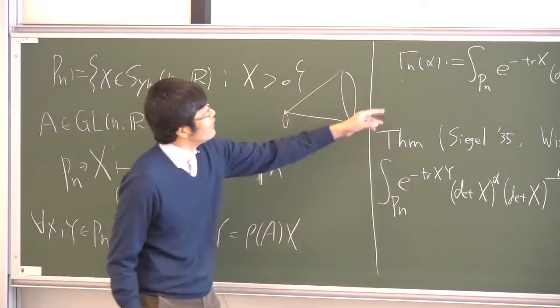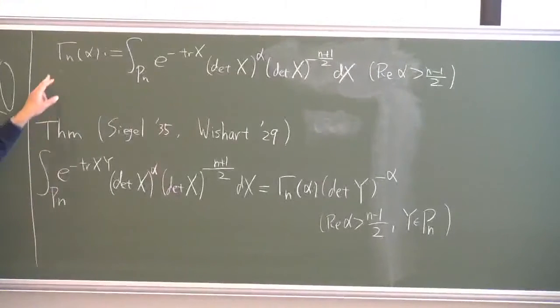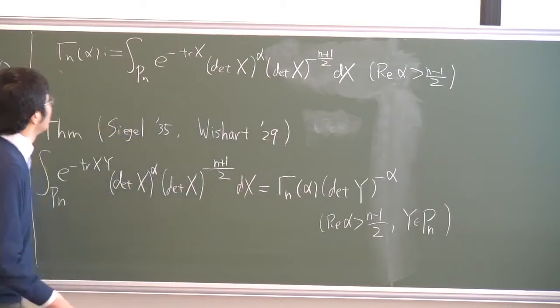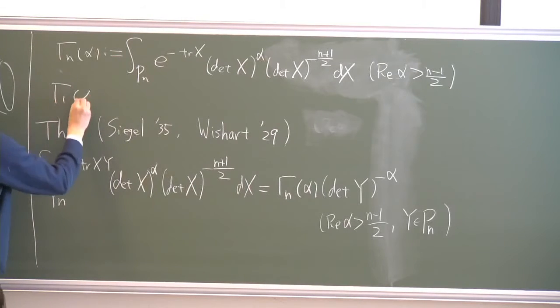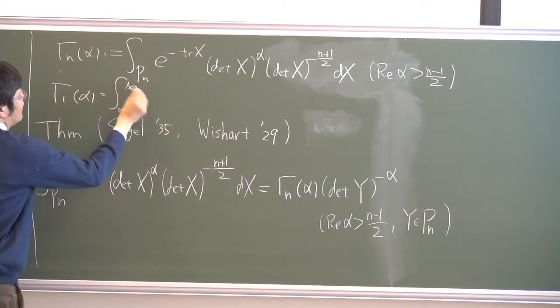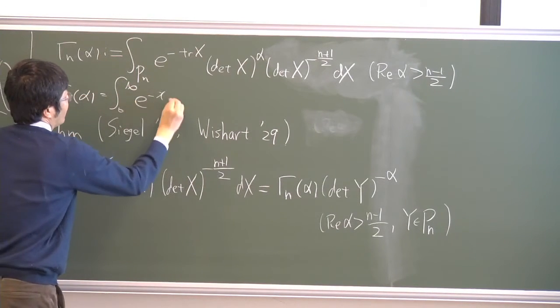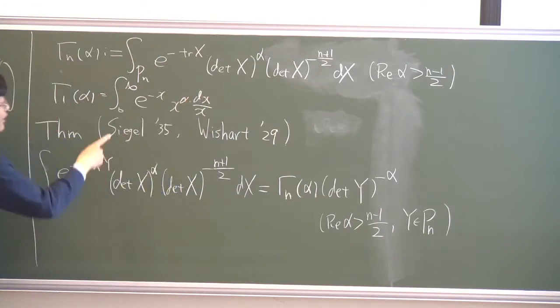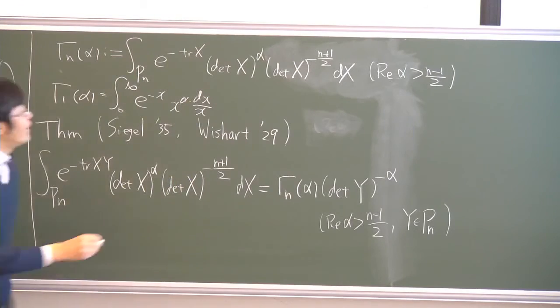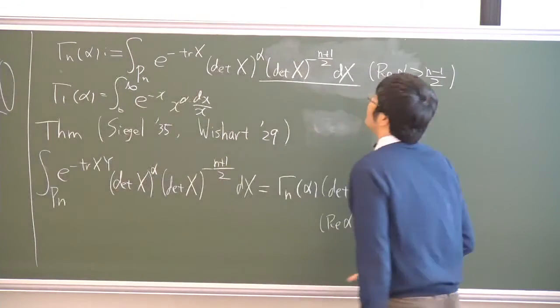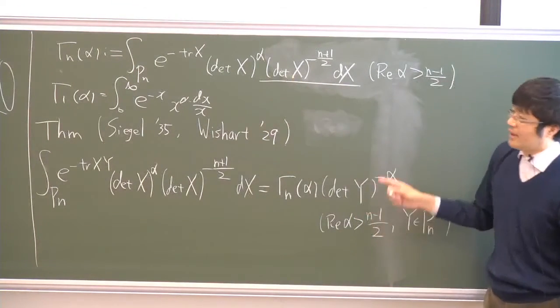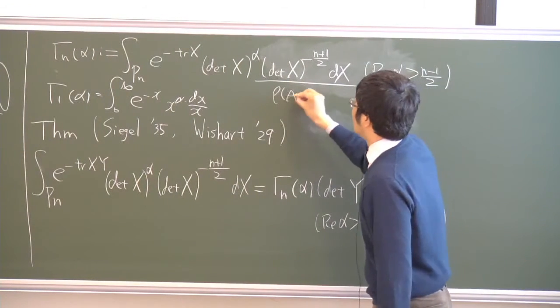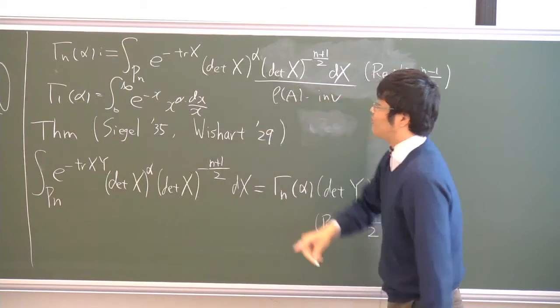I will present one. Let γ_n be the function of α defined by this integral. For n equal 1, this is usual gamma integral α. So x dx is invariant measure on the half line. And in the same way,